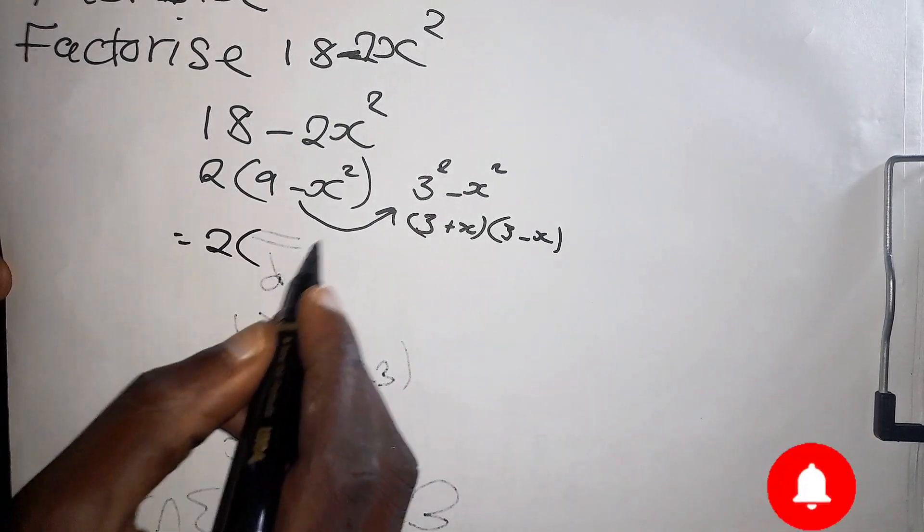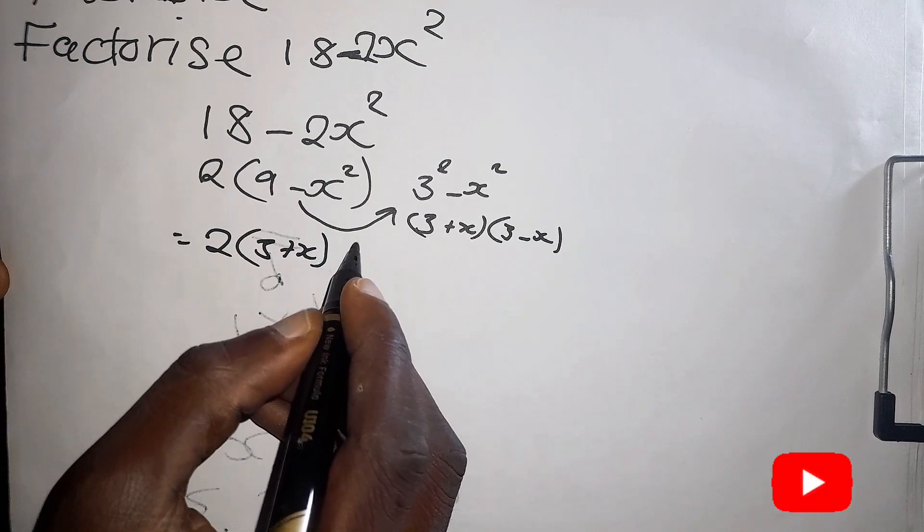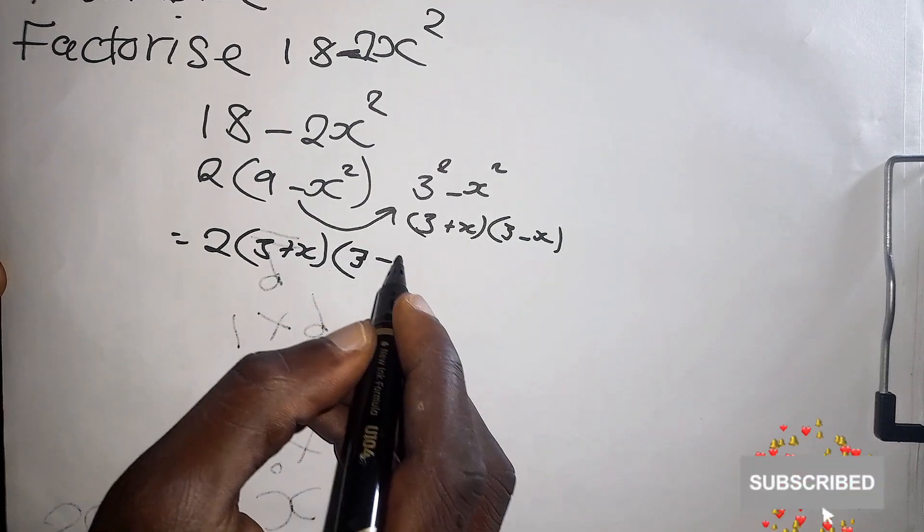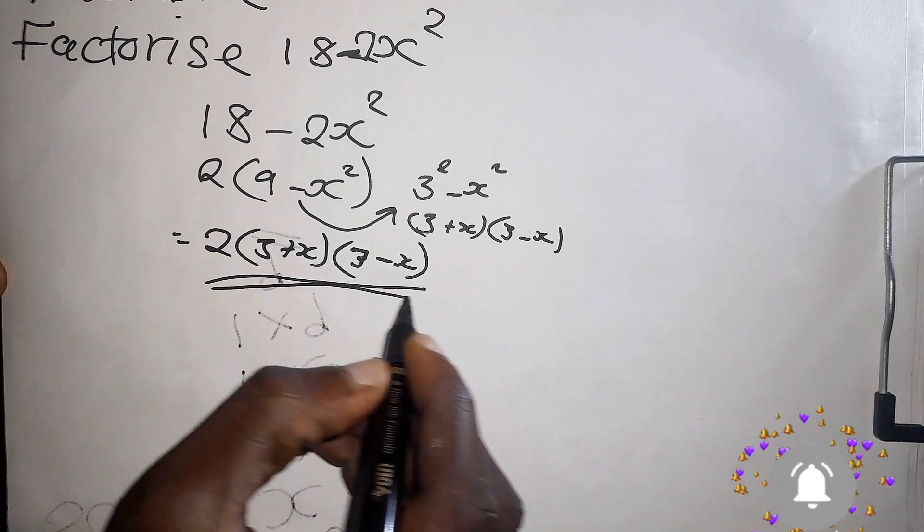it will be 3 plus x and 3 minus x. So therefore, the final answer, we have 2 outside, 3 plus x, then you have 3 minus x. So this is our answer.